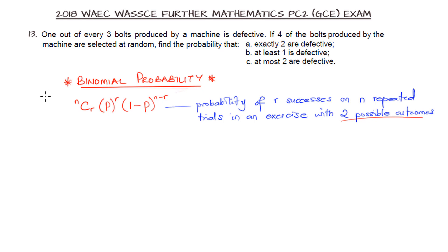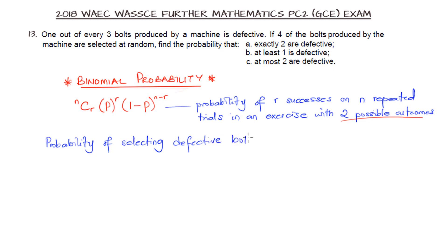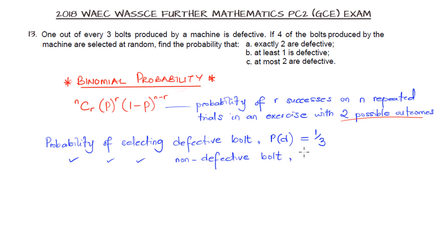We need to identify what counts as success and what counts as failure. We can take the defective boat as failure and the non-defective as success, or reverse it as I'm going to do here. So the probability of selecting a defective boat is 1 over 3, and the probability of selecting a non-defective boat is 1 minus 1 over 3, which is 2 over 3.